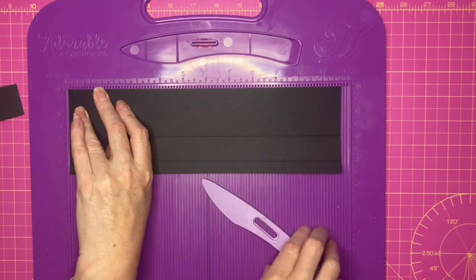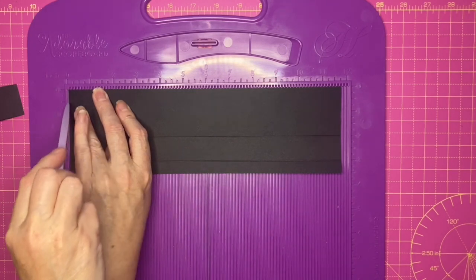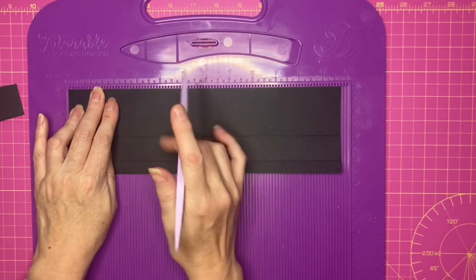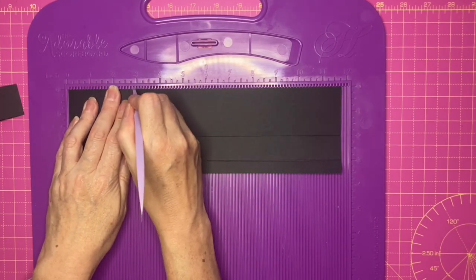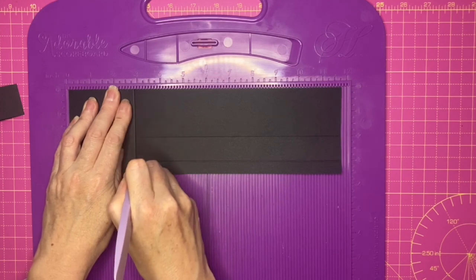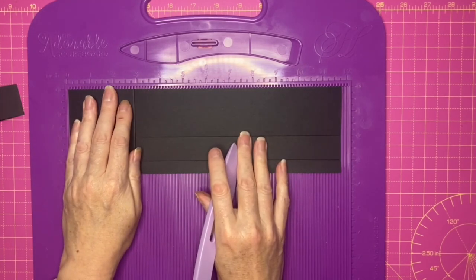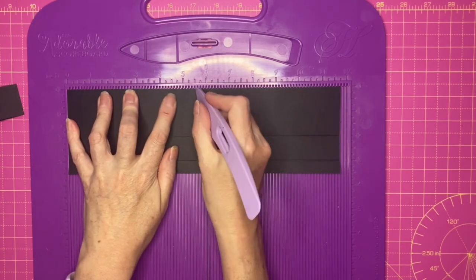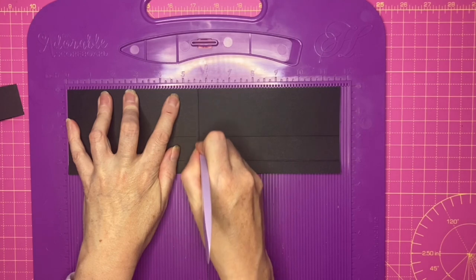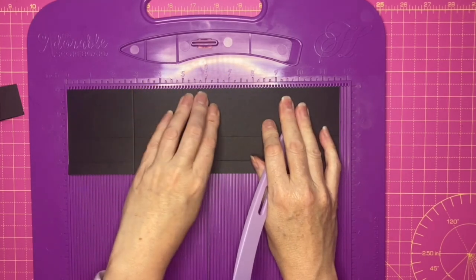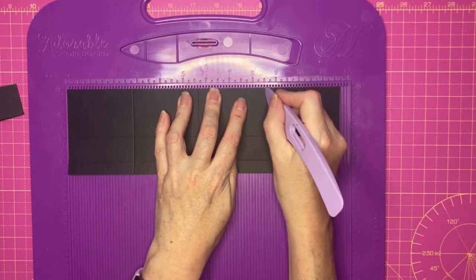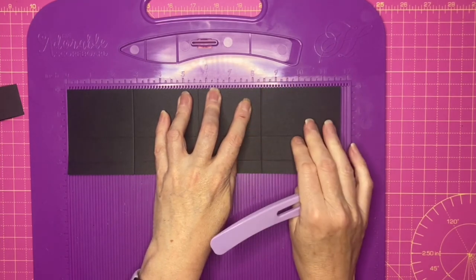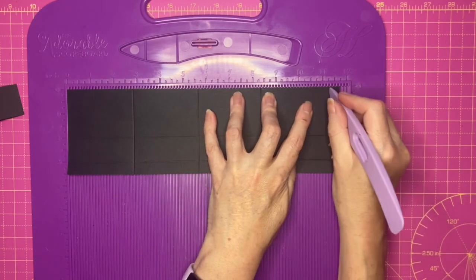So I've got a slight gap here as you can see and I'm now going to score at two and seven eighths. I'm now going to push the card back in up against the edge. I'm going to score at five and five eighths, eight and three eighths, and eleven and a quarter.